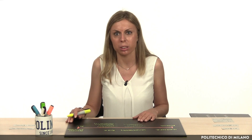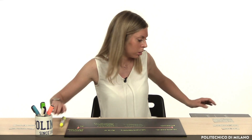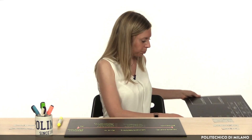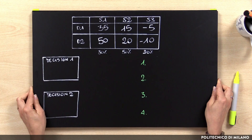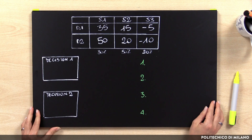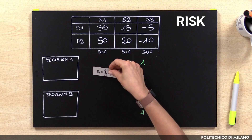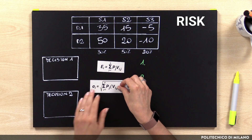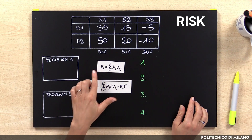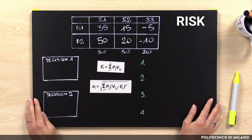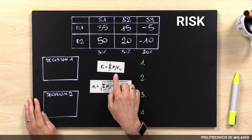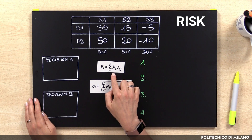But could decision makers take decisions under risk conditions? There are two main concepts to consider in order to take decisions in risk conditions: the expected value and the measure of risk. The expected value is the value that the decision maker could obtain for each scenario, multiplied by the probability of occurrence of each scenario.